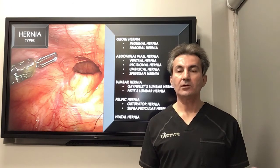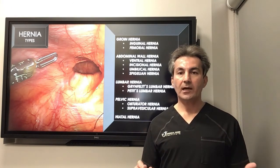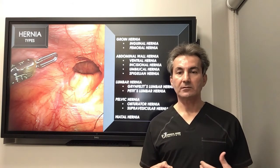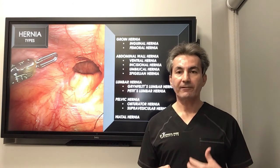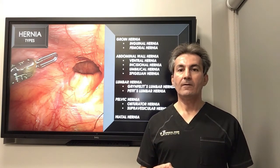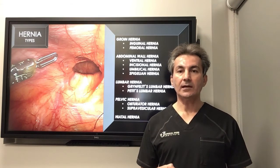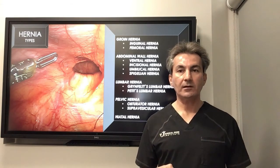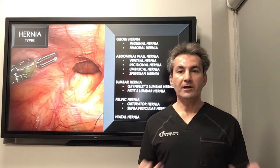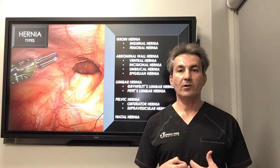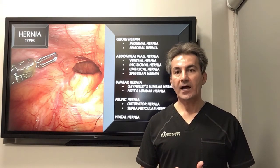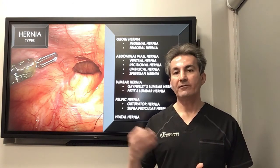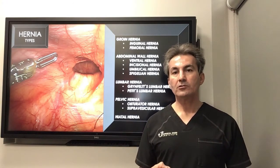We also have abdominal wall hernias, which can happen congenitally, with a workout, or as a sport-type hernia where you strain the muscles in the front of the abdomen. This includes hernia around the belly button, called umbilical hernia. We call these ventral hernia or abdominal wall hernia.